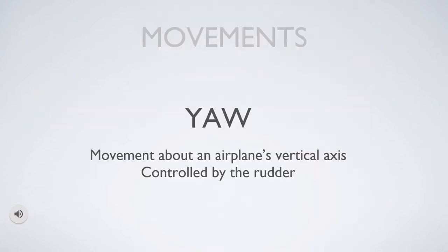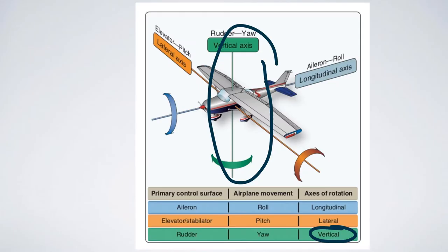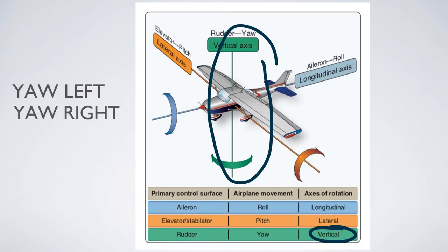The last movement is yaw. Yaw is movement about the aircraft's vertical axis and it's controlled by the rudder using the rudder pedals. So here you have the vertical axis, controlled by the rudder.